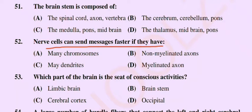Question number 52: Option A: many chromosomes, option B: non-myelinated axons, option C: many dendrites, option D: myelinated axons. The correct option is option D: myelinated axons, which will send faster messages.